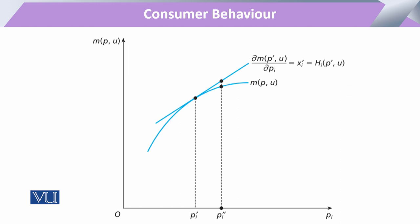इसी को जब हम graph की शकल में देखते हैं तो x-axis पर हमने उस commodity की prices को show किया है — initial price और right side पर increasing prices। y-axis पर amount of M (or E for expenditure) है — वो amount जो utility attain करने के लिए spend करनी होगी। Other goods की prices और utility को constant रखा गया है।